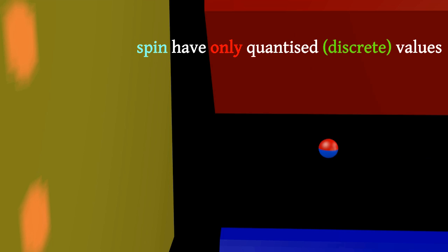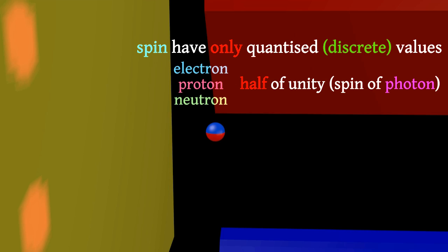Spin of a particle is measured in the units of the spin of photon. It should be discrete, but particles such as electron, proton, and neutron have the spin equal to half of unity.